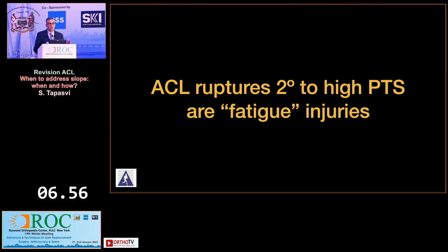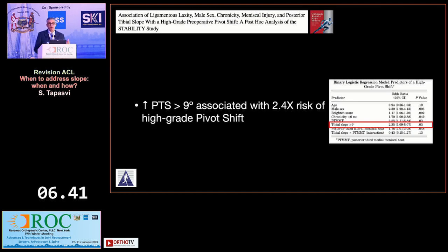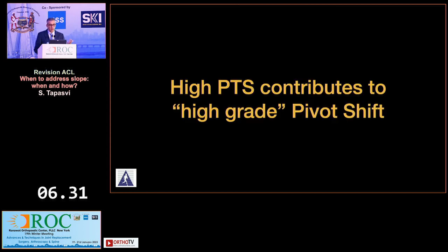ACL rupture in a patient with a high tibial slope can be a fatigue injury as well. We know that the pivot shift can be exaggerated when you have a high tibial slope, described about 15 years ago. Data from the Stability One study shows that if your posterior tibial slope is more than nine degrees, the risk of a high grade pivot shift increases almost two and a half times.